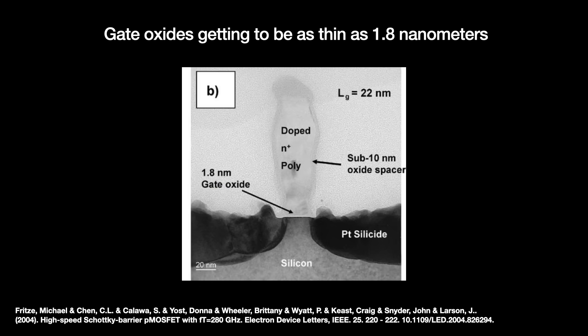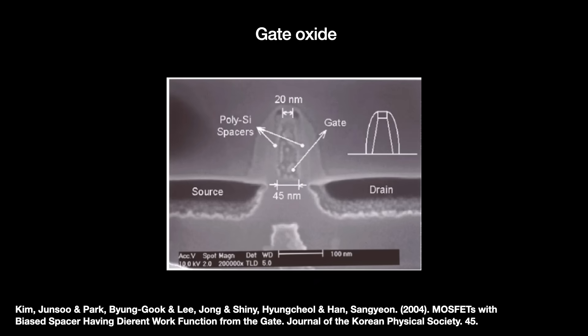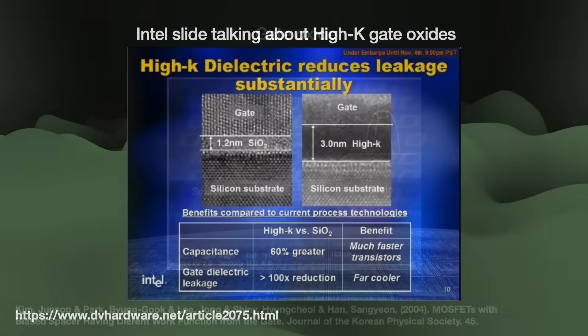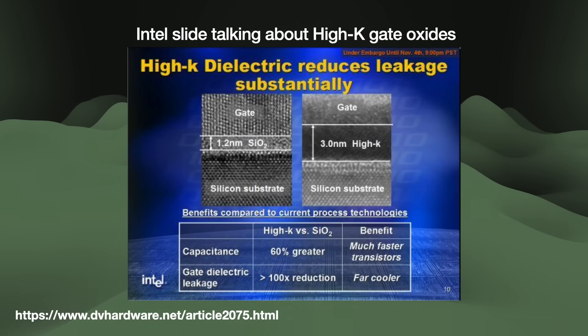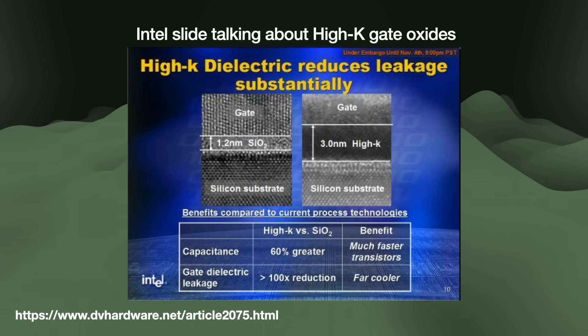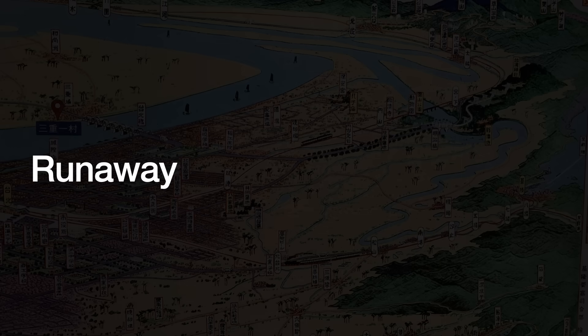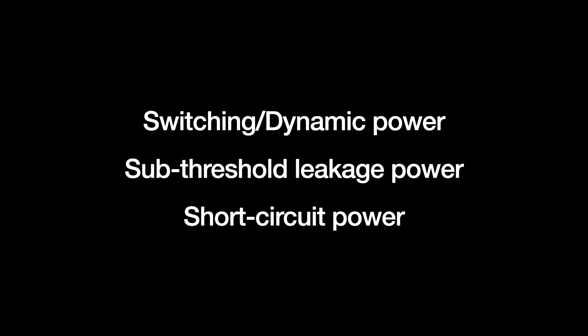Third, higher junction temperatures reduce the chip's overall longevity. The transistor's gate oxide between the metal gate and the channel is one of its most vulnerable components — long-term exposure to electric fields causes these gate oxides to eventually break down, and higher junction temperatures accelerate this process by increasing interactions between itself and tunneling electrons. Recent innovations like gate oxides based on exotic high-K materials only worsened this because their thermal conductivity is worse, so heat cannot easily dissipate away from the transistor. Finally, heat compounds — it begets more heat until it runs away.